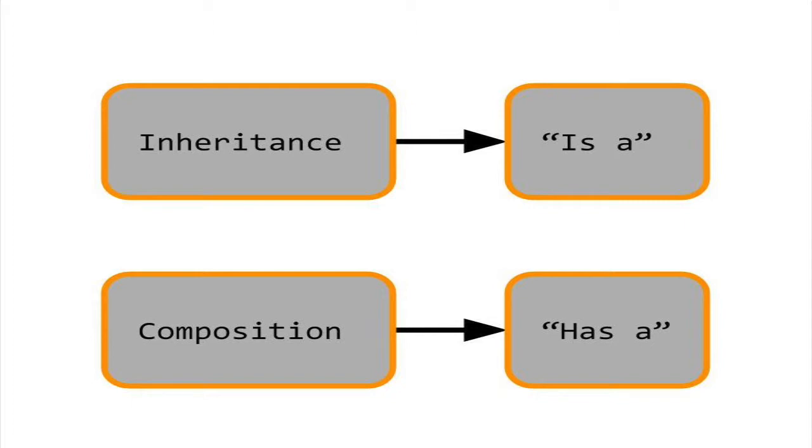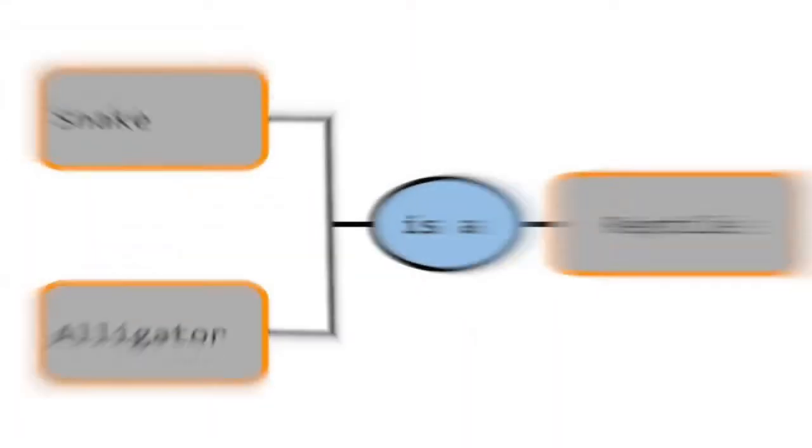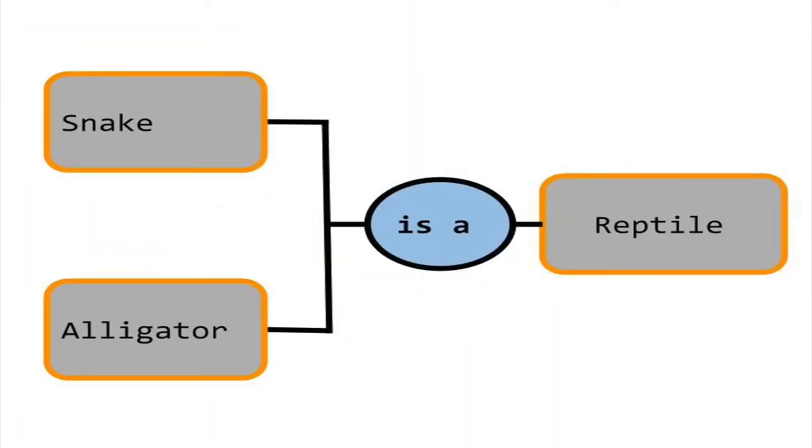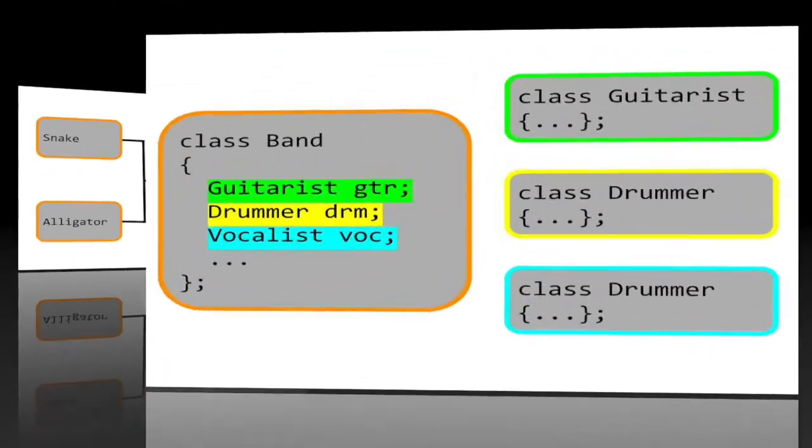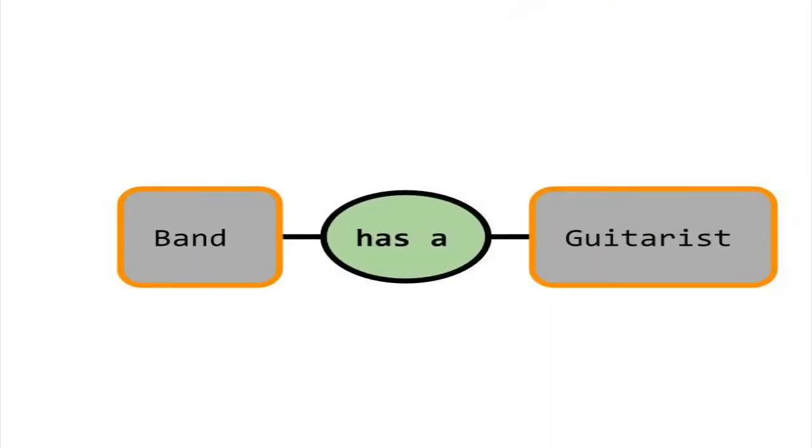Inherited classes are commonly described as having an is-a relationship with each other, while composition involves a has-a relationship between classes. We can say that snake is a reptile and that alligator is a reptile, but we cannot say that guitarist is a band. Instead, we say that the band has a guitarist.